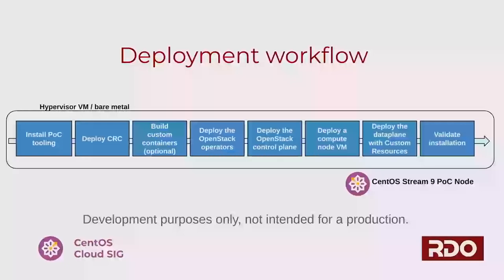The deployment sequence starts with installing the proof-of-concept tooling and all requirements: cloning repos, installing YAML repositories, Golang, and so on — all described in the documentation. Then we move to the actual installation of Code Ready Containers. Once CRC is running, we move to an optional step: if you decide to make a non-default deployment, you need to provide your own custom containers, which is where TCIB comes in. Next it's time to deploy the OpenStack operators. Those operators are designed to be independent from the OpenStack release, so with this version of the operators you can install Antelope, Bobcat, or whatever release you want.